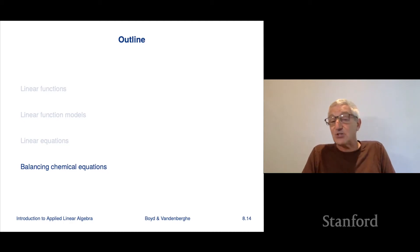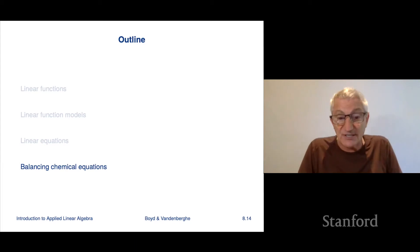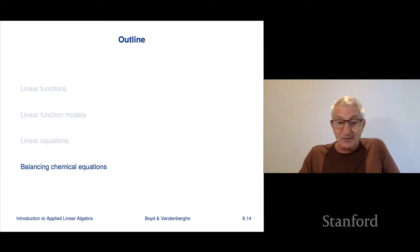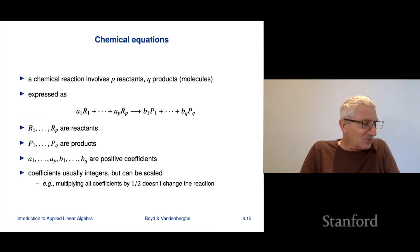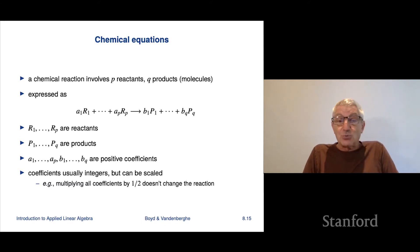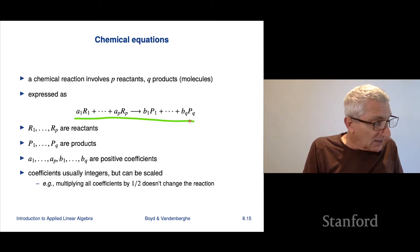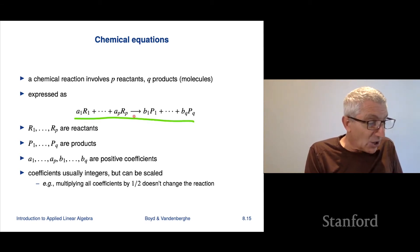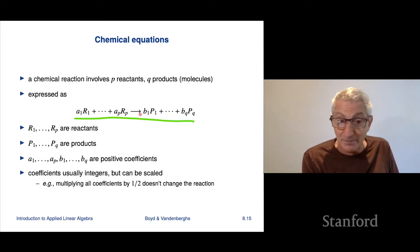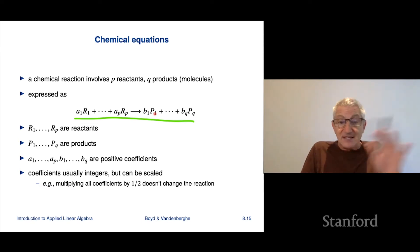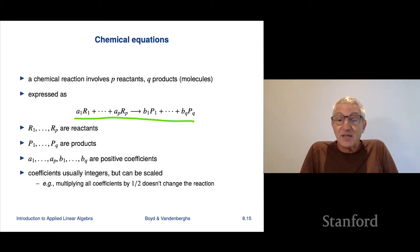We're going to look at an example taken from very elementary chemistry, just to show how linear equations arise in practice. A chemical reaction involves p reactants and q products. Each reactant and product is a molecule, and the reaction is written as A1·R1 plus ... plus Ap·Rp goes to B1·P1 plus ... plus Bq·Pq. This declares that you take A1 units of reactant 1, A2 units of reactant 2, and so on — the chemistry happens — and you end up with B1 units of product 1, up to Bq units of product q.